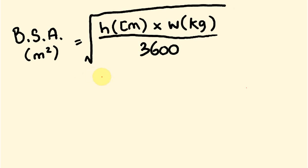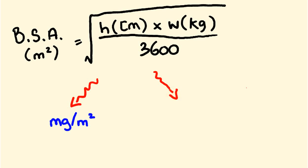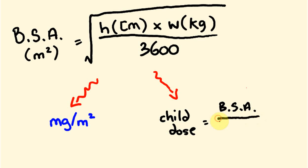With the body surface area we can do a few things. We might work out a medication based purely upon body surface area — for example, the medication might be something like this many milligrams per metre squared, which is straightforward to calculate by multiplying out. Alternatively, we might have a medication based upon an adult dose: the adult dose is given, and we work out the medication based on the kid's body surface area. The formula for this is: child dose equals the body surface area of the kid divided by 1.73, multiplied by the adult dose.